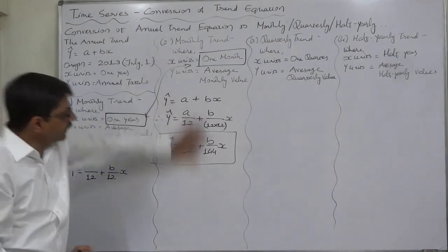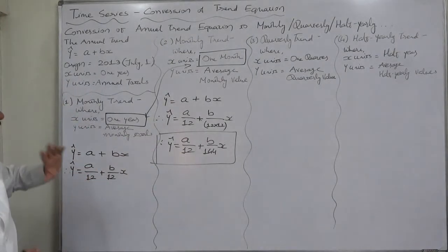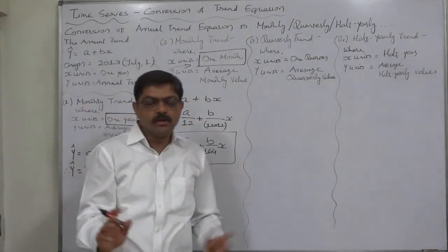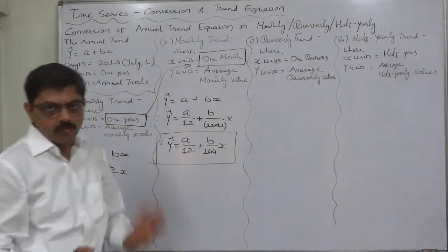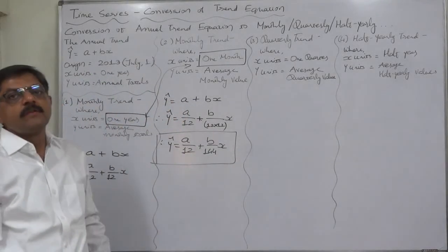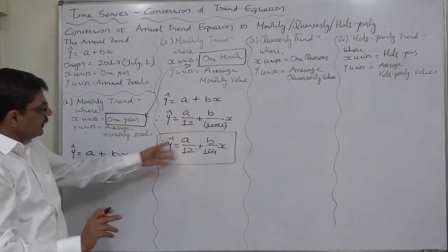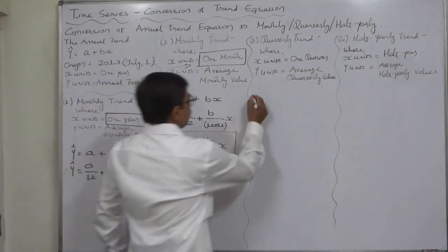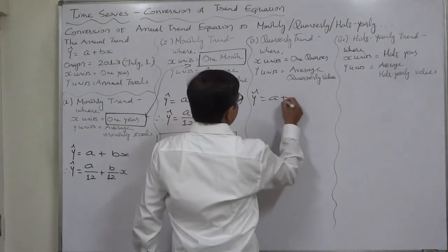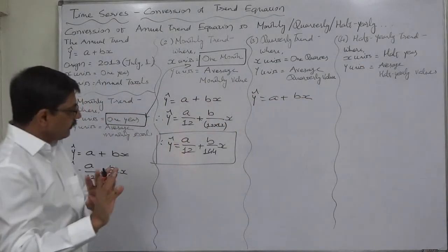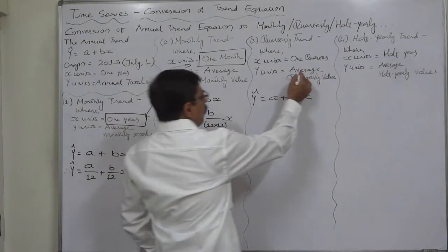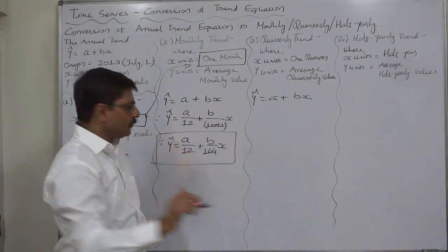Now what about quarterly trend? We know that a year is made up of four quarters, so quarter is the fourth part of the year and other logic is the same. The annual trend given is a plus bx where a and b and x everything is yearly. Quarter means fourth part of the year.